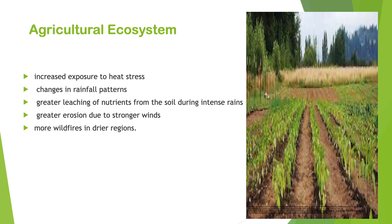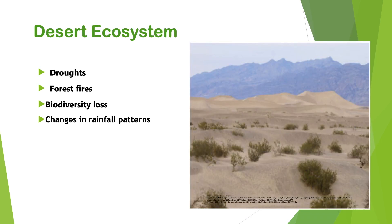Agricultural ecosystems are facing certain problems related to climate change: increased exposure to heat stress, changes in rainfall patterns, greater leaching of nutrients from the soil during intense rain, greater erosion due to stronger winds, and more wildfire in drier regions. Desert ecosystem includes arid and semi-arid areas, grasslands, savannas and Mediterranean landscapes.